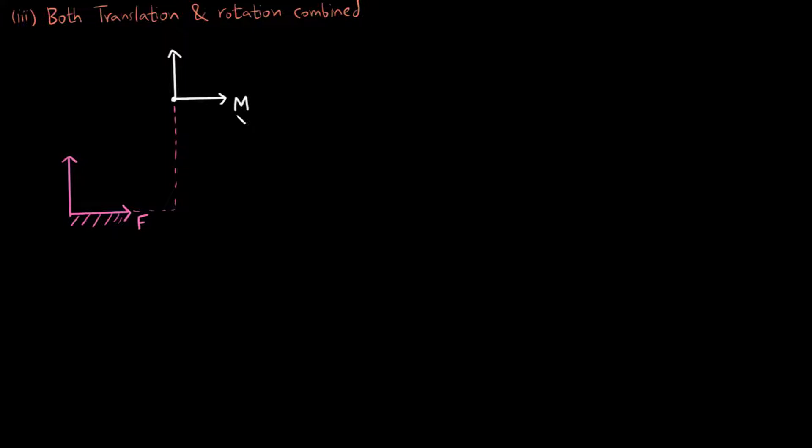Here I have drawn both the fixed frame and the moving frame. At first the moving frame is just translated by some units in x and some units in y above the fixed frame and then it is rotated by an angle of theta in the anticlockwise direction. So this combined motion is the translation and rotation combined.